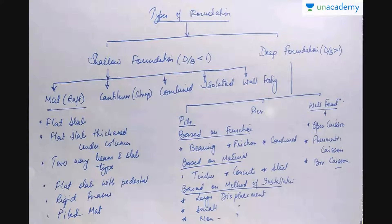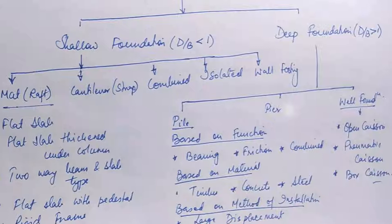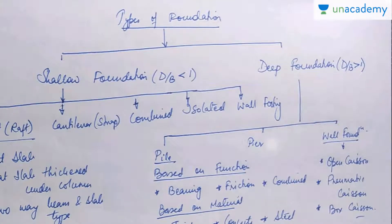Now let's see the different types of foundations. Broadly, they can be categorized as shallow foundation and deep foundation. A foundation is called a shallow foundation when D/B (depth to width ratio) is less than 1, and a deep foundation when D/B is greater than 1. There can be a variety of shallow foundations.